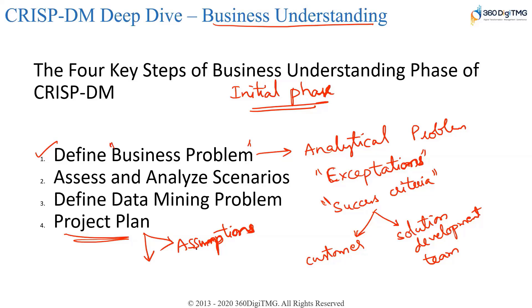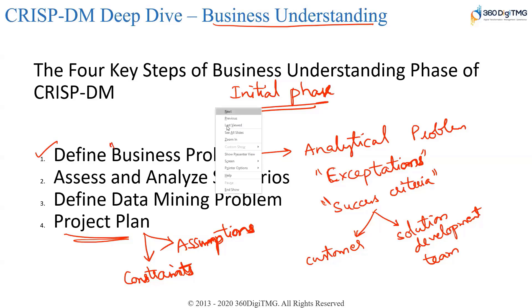I'm assuming that the customer has a server on which we have to perform data mining — all assumptions. Constraints: if the customer is in Africa and you are remotely connecting from India, that would mean a lot of internet glitches — that is a constraint. What are the challenges and caveats to proceed further is something that you record as part of business understanding.